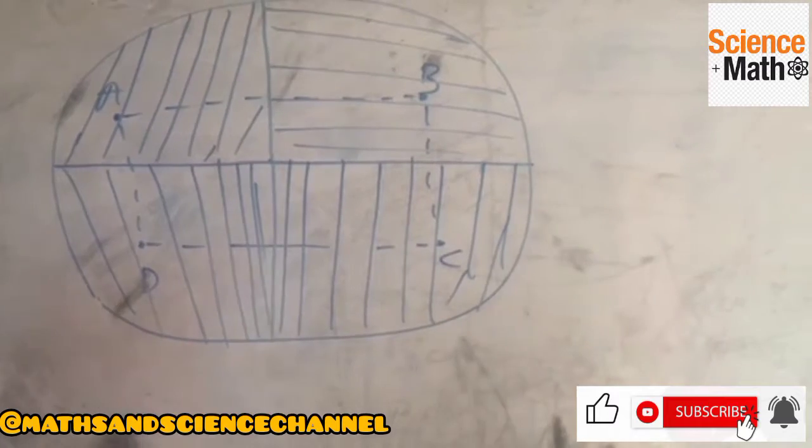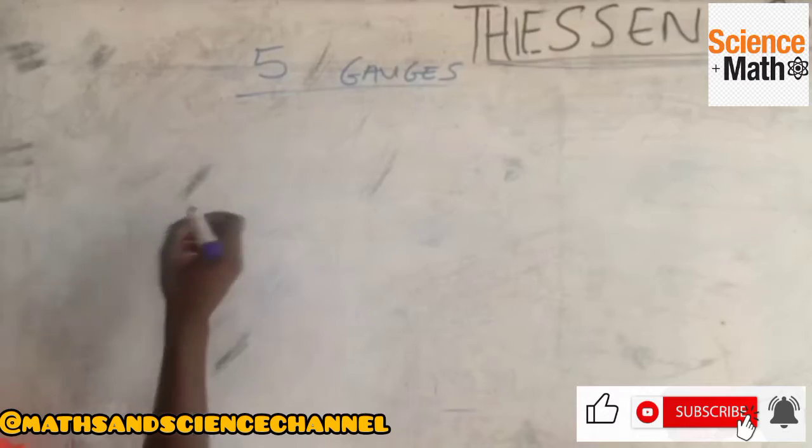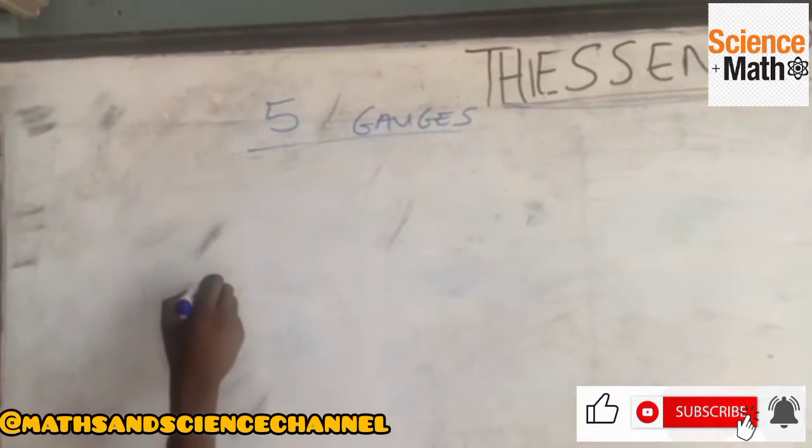So that is it. In five gauges, you have to locate the points: point A, point B, point C, point D, and point E.